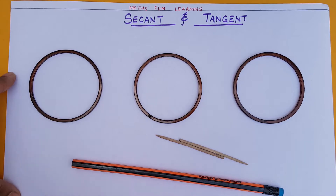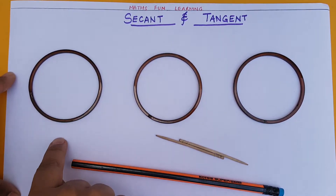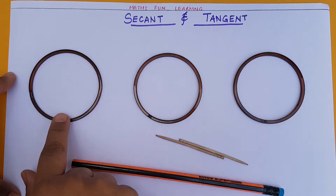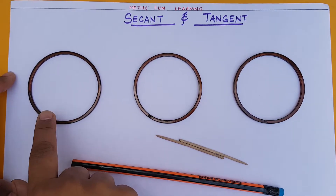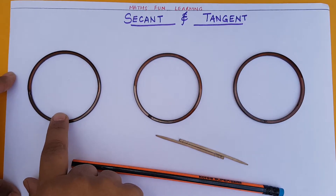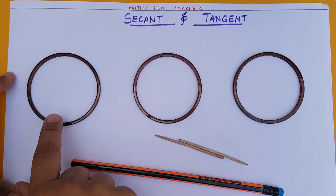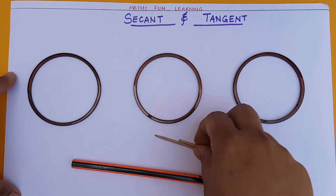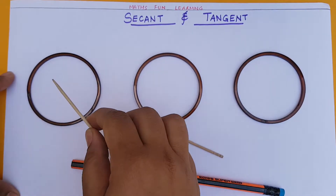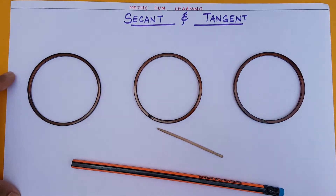The shape of this bangle is a circle. You already know what a circle is, what is radius, diameter, and chord. I discussed this in one of my videos — I will send the link in the description box. Now I'm using these sticks to explain radius. The center point of the circle is here, and radius is a line segment joining the center to the boundary.